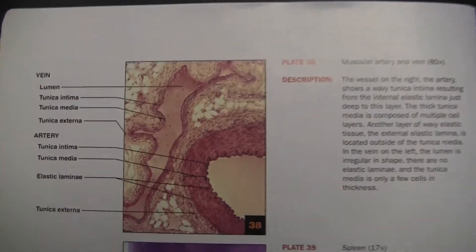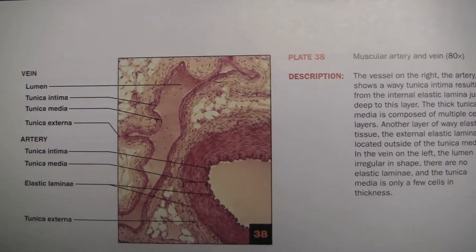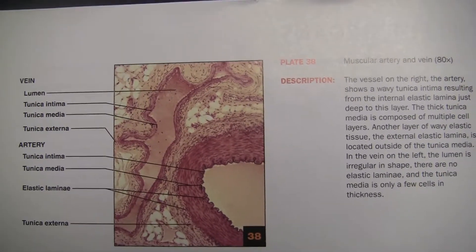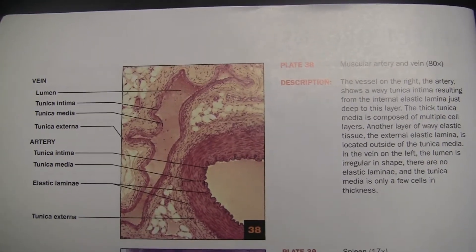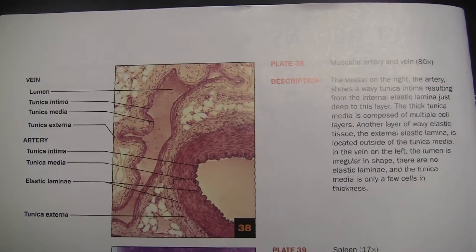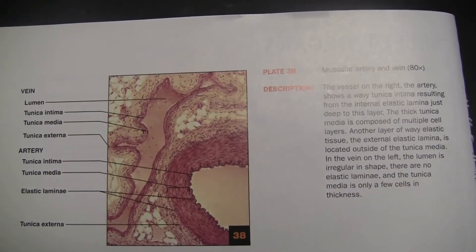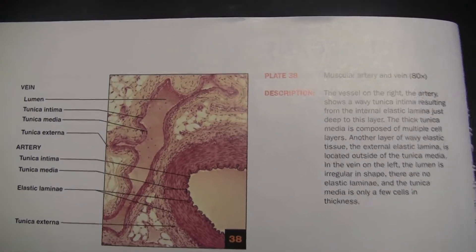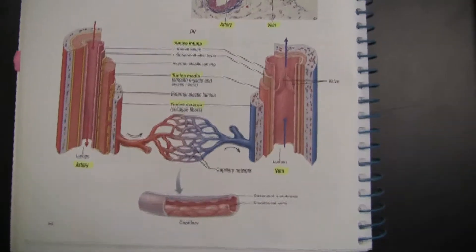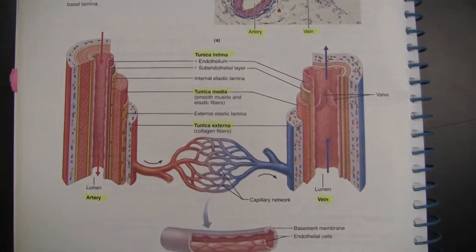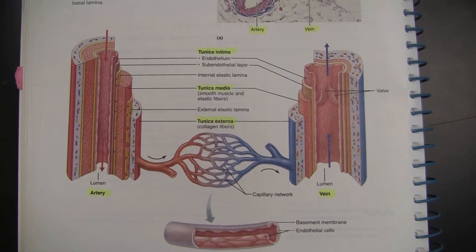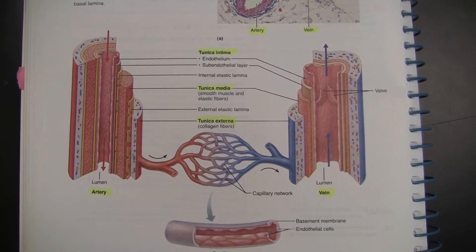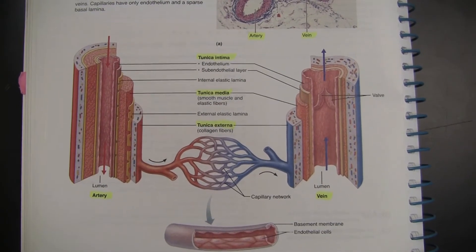Here's the slide — the artery and vein. You can tell that the arteries are the nicely formed circles. The veins are kind of just all strung out. Here it is again in the book: you can tell the vein has the thinner tunica media and larger lumen, and the artery has a smaller lumen and larger tunica media.